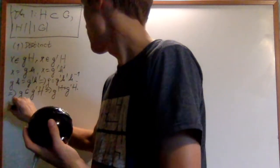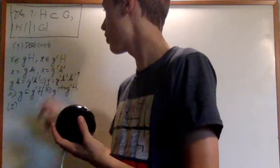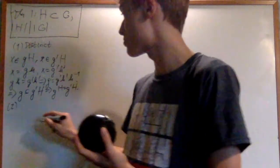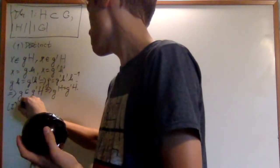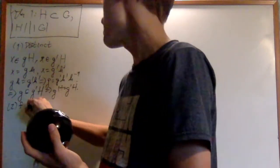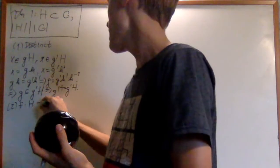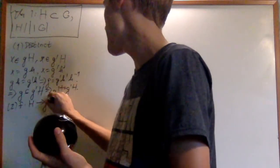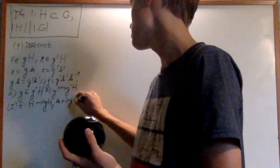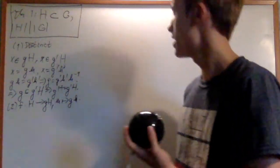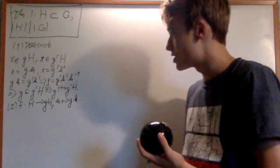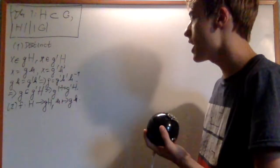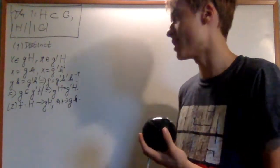Number two is that all cosets are the same size. The reason for this is that there is a bijection between H and gH, which just sends little h to g times little h. This is very clearly a bijection, as you can check, and therefore they're the same size.